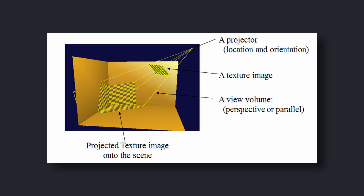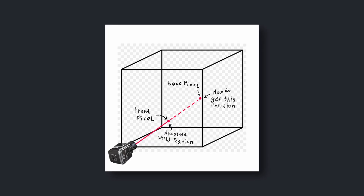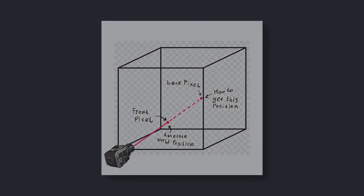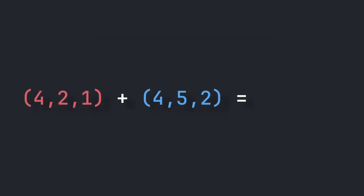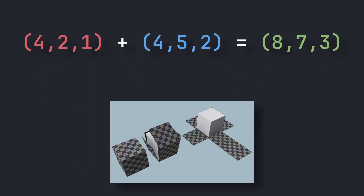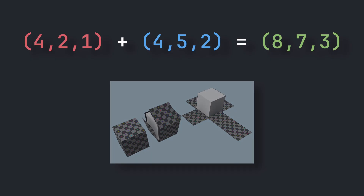To make a decal look natural, we need to know exactly where a pixel is in 3D space. We do this by transforming the pixel's world position into decal space. And just like whenever we want into someone's space, we multiply by the inverse of their matrix — using the inverse of the decal projection matrix. This lets us calculate coordinates as if the decal is wrapped around the surface. Now it fits perfectly.